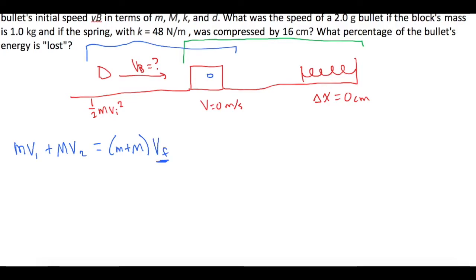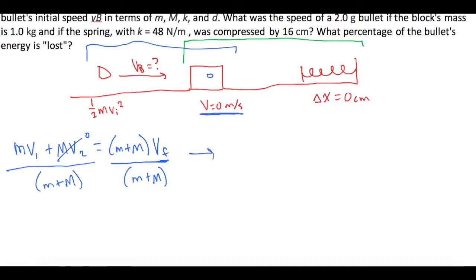We want to isolate the combined velocity, so let's divide both sides of the equation by little m plus big M. We already know the block's initial speed is 0 meters per second, so that term goes to zero. Dividing both sides by little m plus big M gives us the final velocity of the bullet plus block equal to little m times v1 — the bullet's momentum — divided by the total mass.